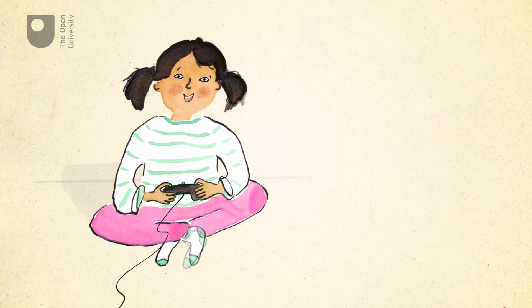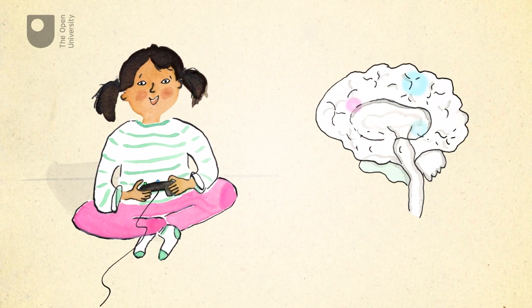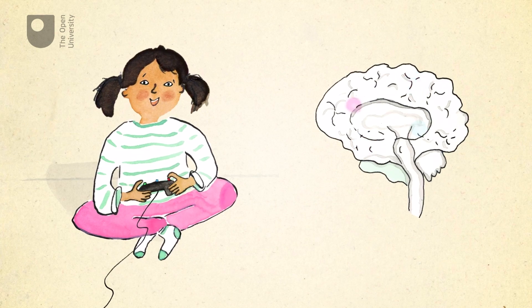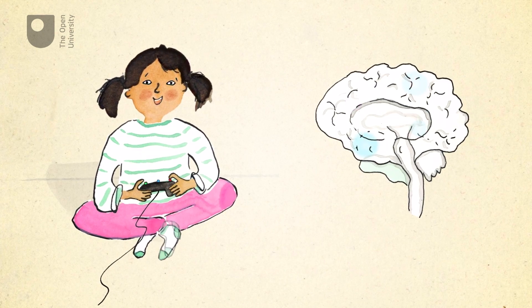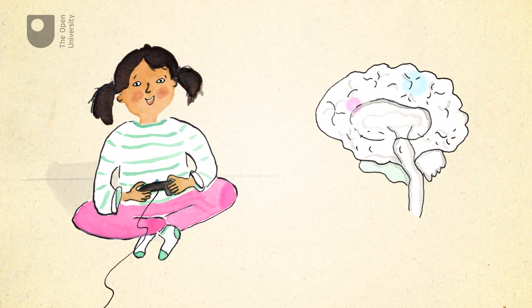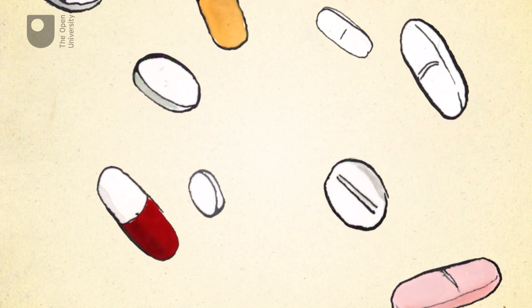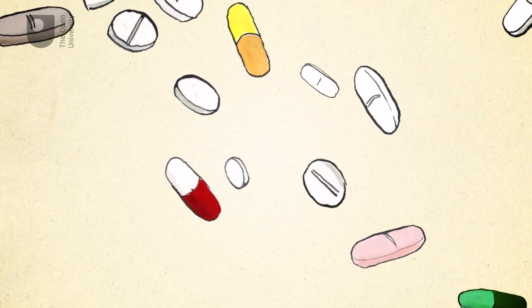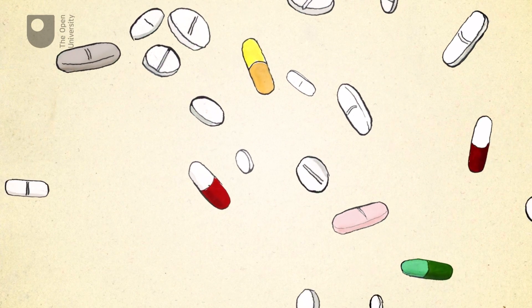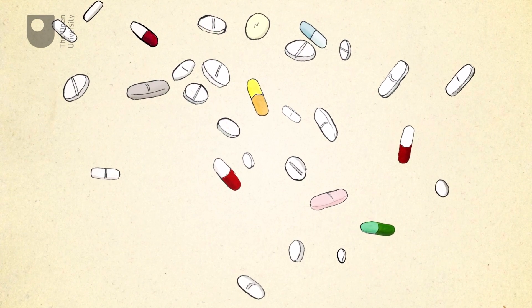Scientists are also discovering brain processes and pathways that may work differently for people with ADHD. This has helped to explain why drugs such as Ritalin can help manage some of the symptoms.